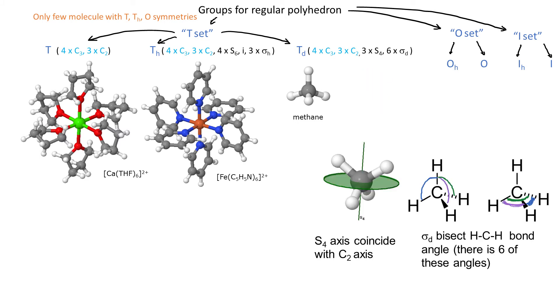The last of the T set is TD. It's like T but with 3S4, the axis for S4 coincides with that of C2, and also we have 6 sigma dihedral. So it seems that D in TD stands for dihedral and H in TH stands for sigma H. And T is just T because it has the least number of symmetry operations, only rotation axes.